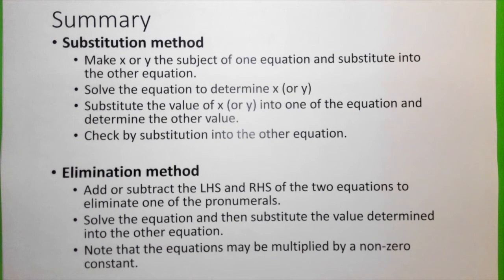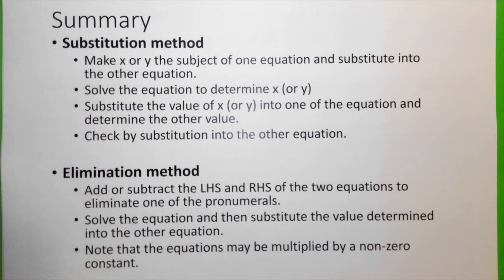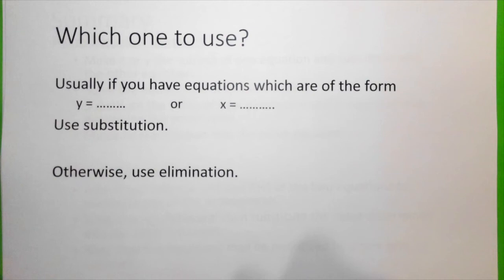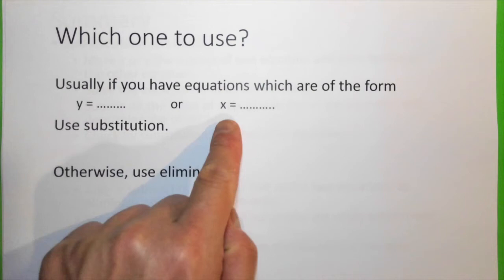As a summary: the substitution method — make x or y the subject of one equation and substitute into the other, solve to determine x or y, then substitute back to find the other value, and check by substituting into the remaining equation. The elimination method — add or subtract the left-hand sides and right-hand sides of the two equations to eliminate one pronumeral, then solve and substitute. Note that equations may be multiplied by a non-zero constant. Generally, if equations are in the form y equals something or x equals something, use substitution; otherwise, use elimination.